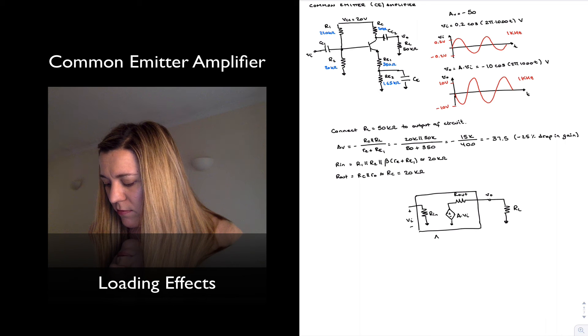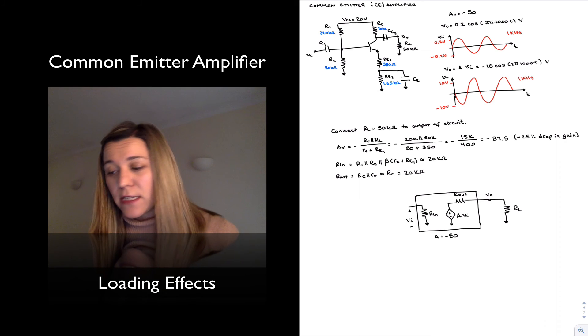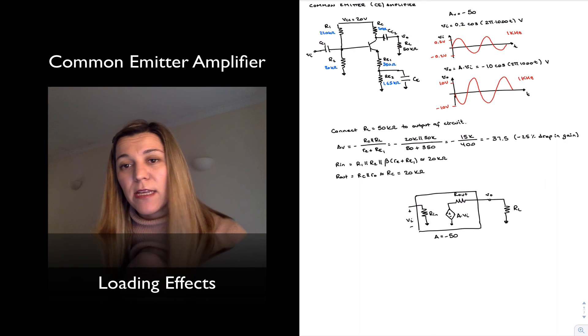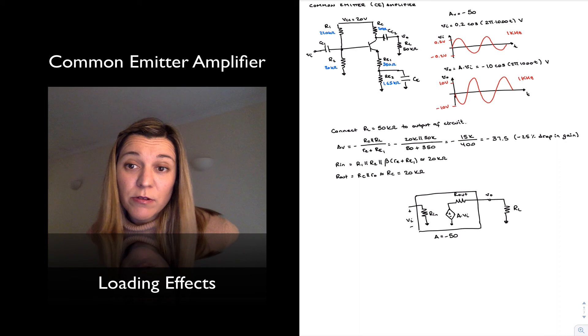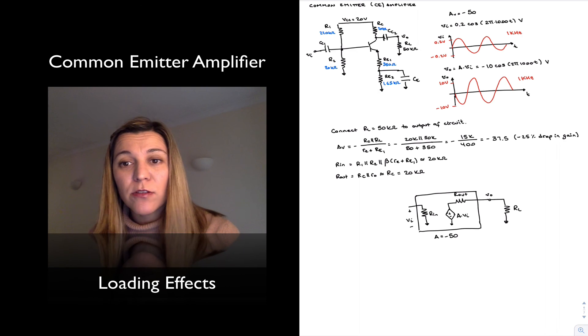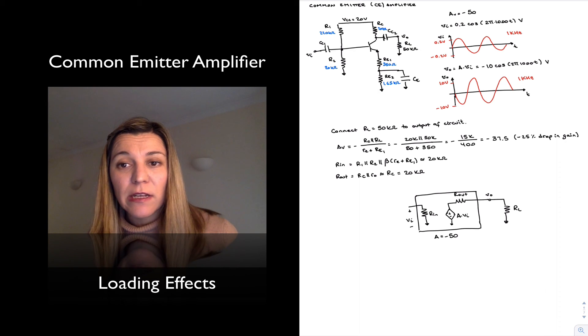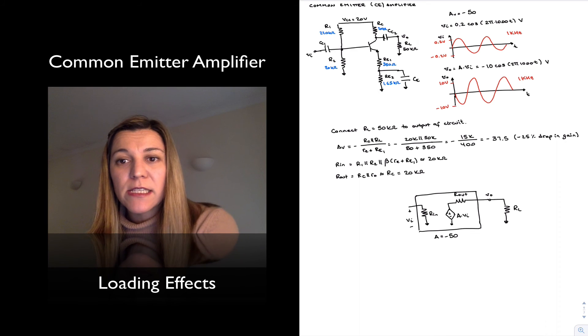So my nominal gain is negative 50, but again, that's a good approximation, or an accurate approximation, when V out is connected to an open circuit, meaning a load resistance of infinity.